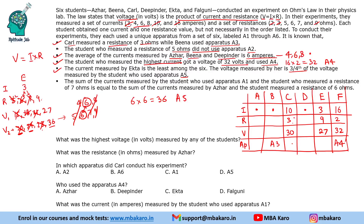The next clue: the sum of currents measured by the student who used apparatus A1 and the student who measured resistance 7 ohms equals the sum of currents measured by Azhar and the student who measured resistance 6 ohms. Currents 3 and 16 are not available for this equation since Ekta has 3 and the highest-current student is already placed.